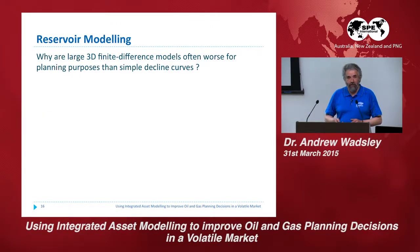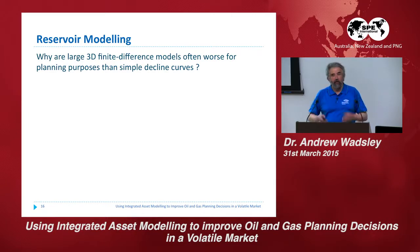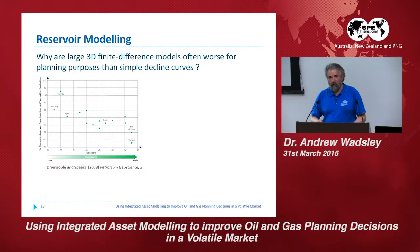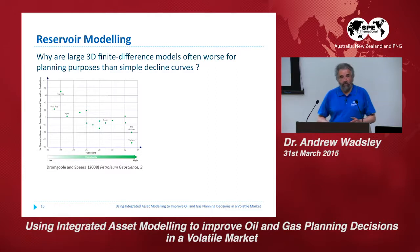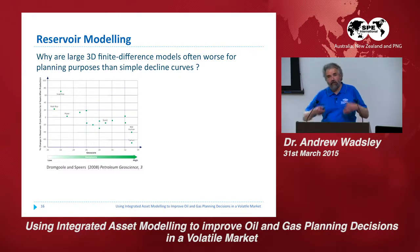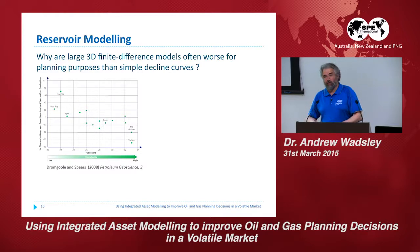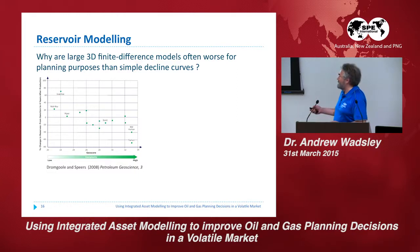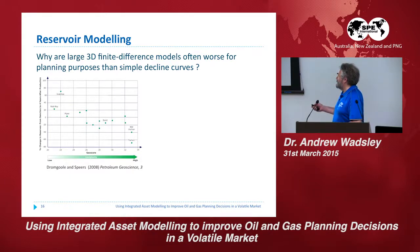Why are large 3D finite difference models often worse for planning purposes than a simple decline curve? This is data from the North Sea — an interesting plot with a thing called geoscore, which is a measure of geological complexity. On the left-hand side is the change in reservoir reserves four years after project sanction. Ivanhoe: four years after project sanction, reserves went up by 70% — very low reservoir complexity. But Tartan: reserves dropped by 70% — complex reservoir. At the beginning of project life, your simulation model in these two reservoirs was wrong.